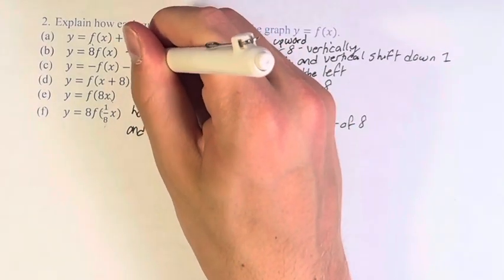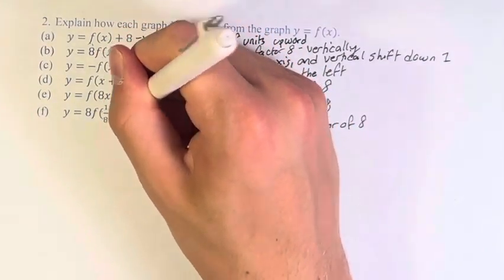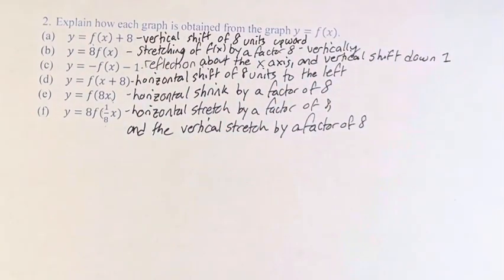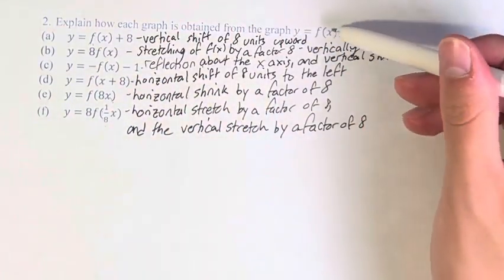So for a, b, c, d, e, and f, these are the ways in which we obtain each of these graphs from y equals f of x.